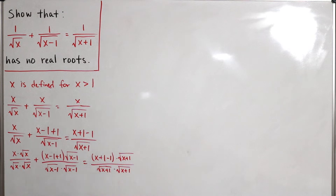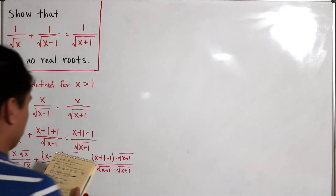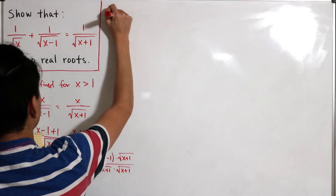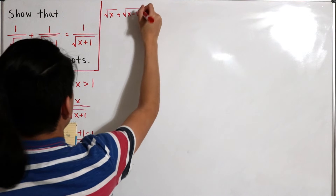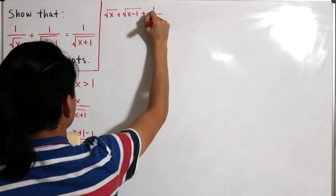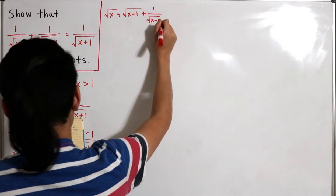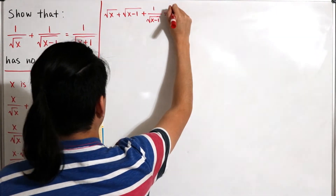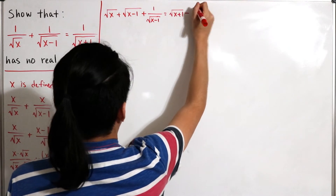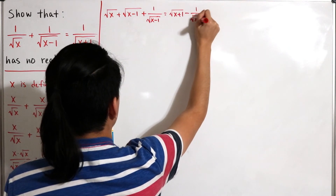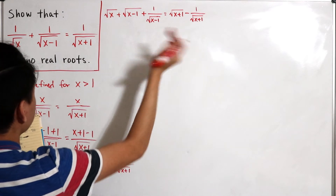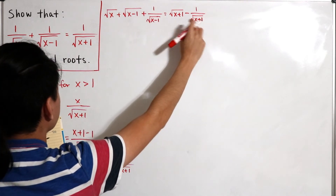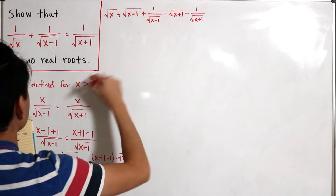After cleaning up and simplifying, this comes down to the square root of x times the square root of x minus 1, plus 1 over the square root of x minus 1, equal to the square root of x plus 1 minus 1 over the square root of x plus 1. Now grouping everything together, I'll subtract 1 over the square root of x minus 1 to the right-hand side and subtract the square root of x plus 1 to the left side.